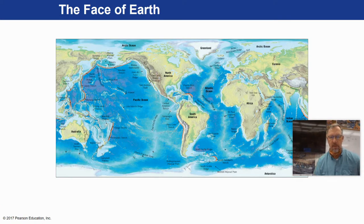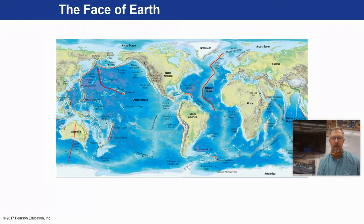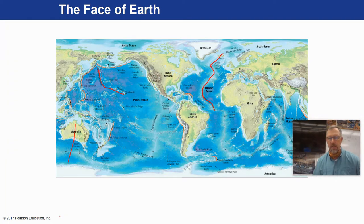Here on the map you can see things like the Emperor Seamount Chain, which helps us date the movement of the Pacific Ocean. There's Iceland, right in the middle of that mid-Atlantic Ridge running right through it — we call that the mid-Atlantic Rise. Here are all your different continental margins, so you can see the face of the earth is a pretty rugged place. You've probably seen this map before.